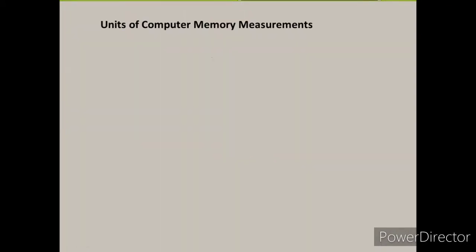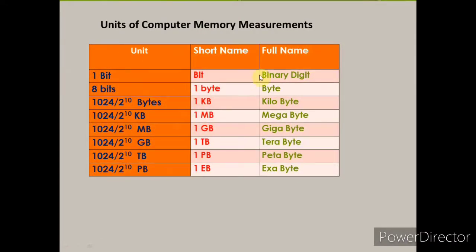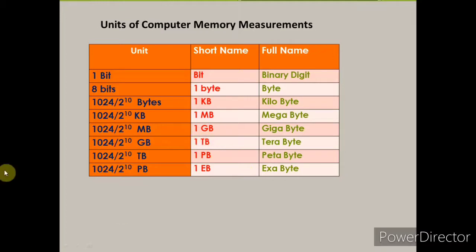Now, units of computer memory measurement. Either a 0 or 1 is known as a bit (binary digit). When 8 bits combine, they make 1 byte. 1024 bytes make 1 kilobyte. 1024 kilobytes make 1 megabyte. 1024 megabytes make 1 gigabyte. 1024 gigabytes make 1 terabyte. 1024 terabytes make 1 petabyte. 1024 petabytes make 1 hexabyte. The smallest unit is a bit and the largest unit is the hexabyte.